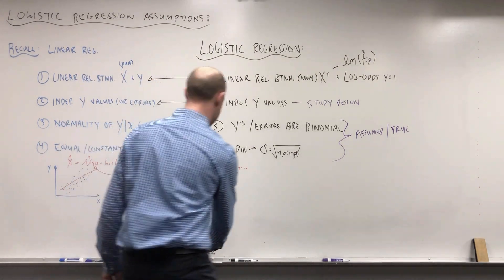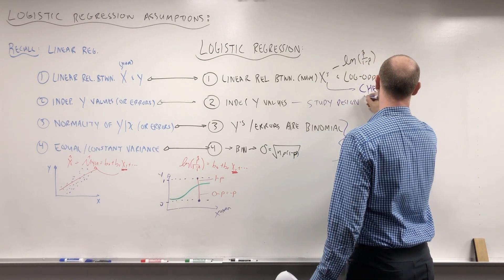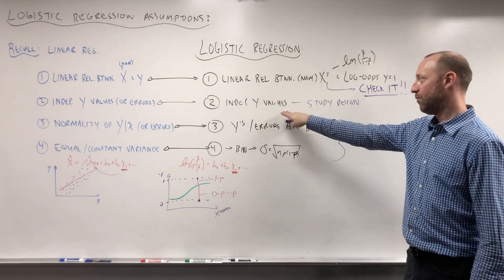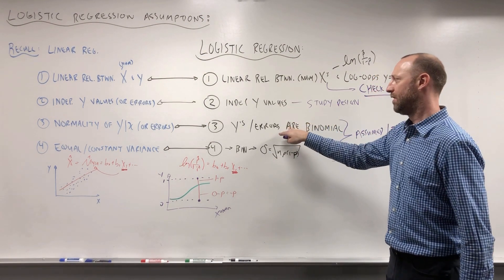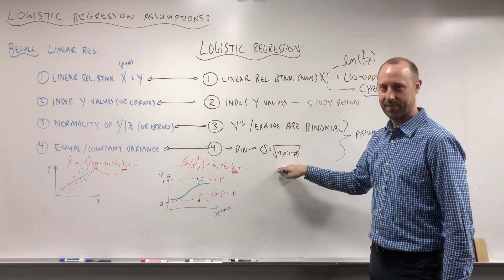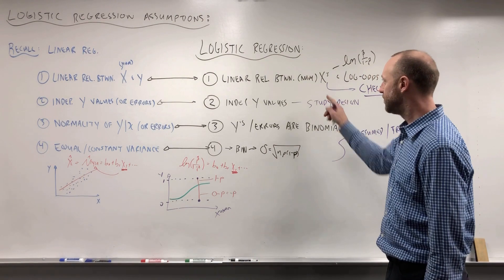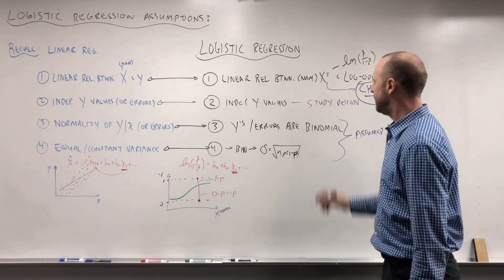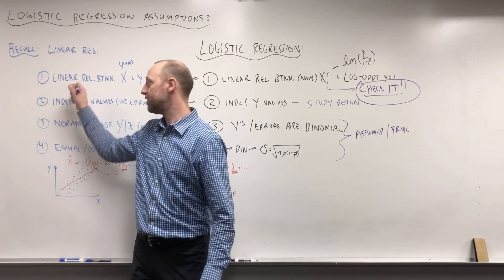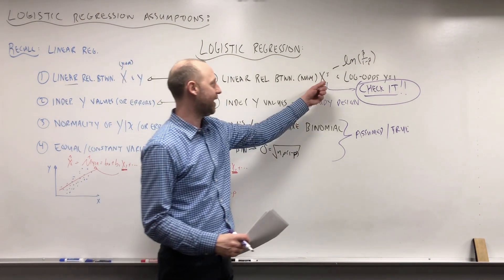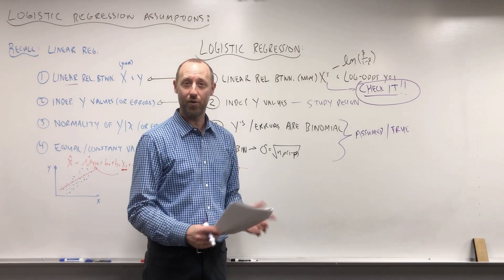Linearity is the only assumption we really need to check. Independence needs to be considered, but not via a statistical test — it's about knowledge of study design. Assumptions 3 and 4 are implied when working with logistic regression, since we're working with an outcome that occurs or doesn't occur — binomial data. Linearity is the most important assumption, just as in linear regression. If the relationship between the x's and the log odds is not linear, that's going to be a problem whether it's a predictive model or an effect size model.